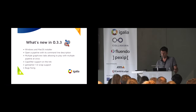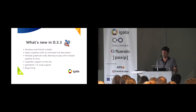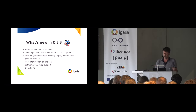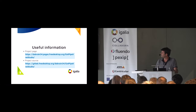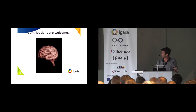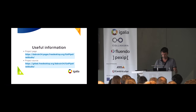There is CAPS filter support since this version. It's also possible to embed GStreamer inside the application with Wayland support via Mason. There are also some bug fixes. Some useful information about the project — there is a project page, project source, and contributions are welcome. I'm open to new ideas.